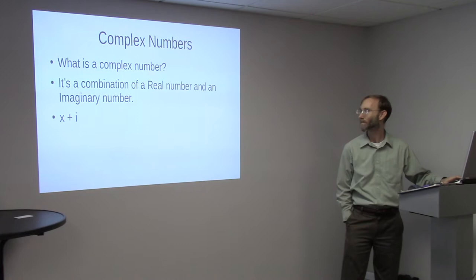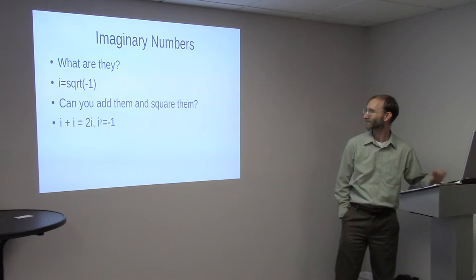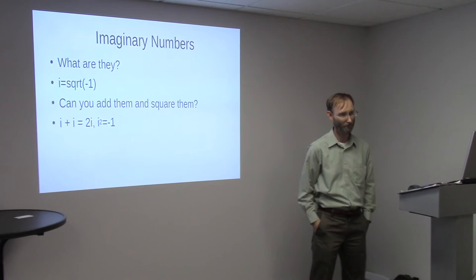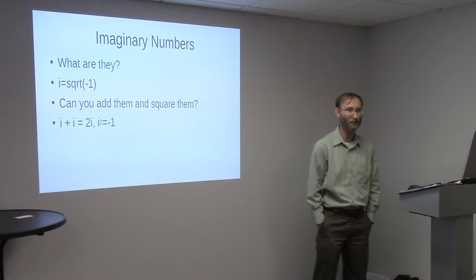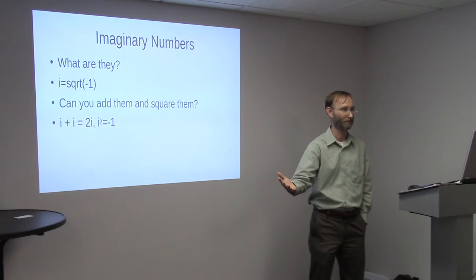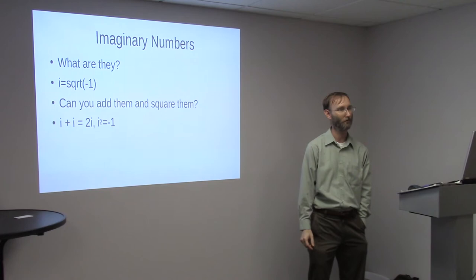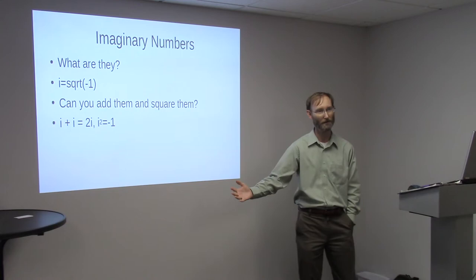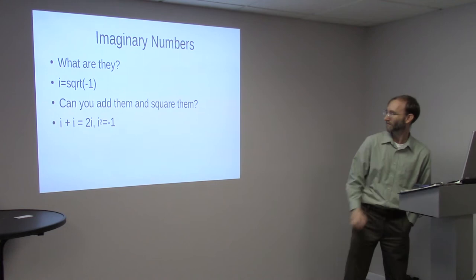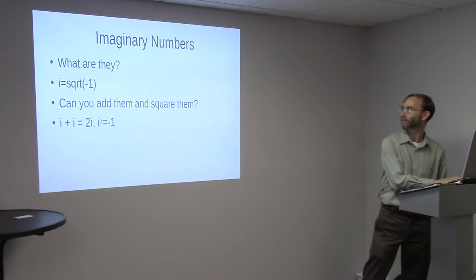Imaginary number is i or the square root of negative one. What's the square root of negative one? i. Because you can't have the square root of negative number, so they made a placeholder called i. What good is that? If you square i, you get negative one back. If you add i plus i, you get 2i. So you can have 2i squared would be negative two, depending on where your parentheses are.